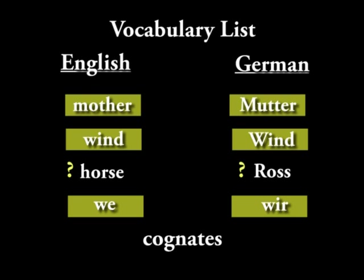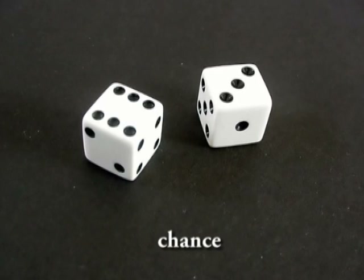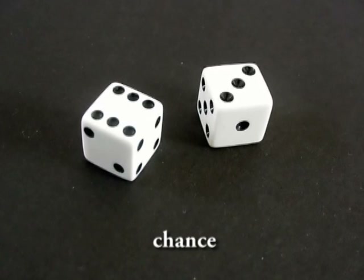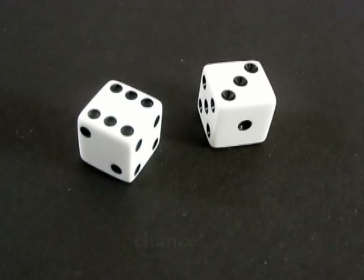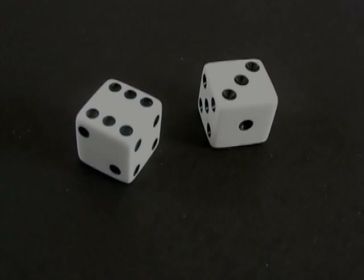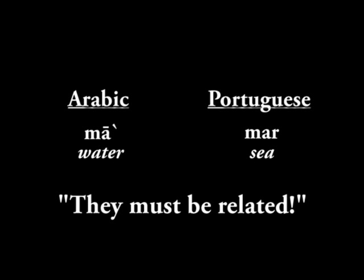But that's not the only reason that two words would look similar. Two words might also look similar to each other due to chance. In other words, randomly over time — especially with small words in languages — we'll find that similar-sounding words will stand for similar concepts. So we might find that the word for water in one language resembles the word in a completely unrelated language, and the two words may not be related at all.